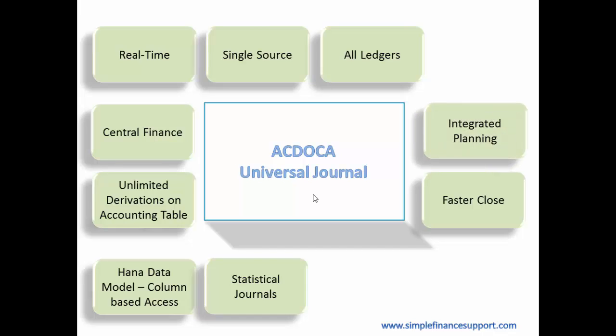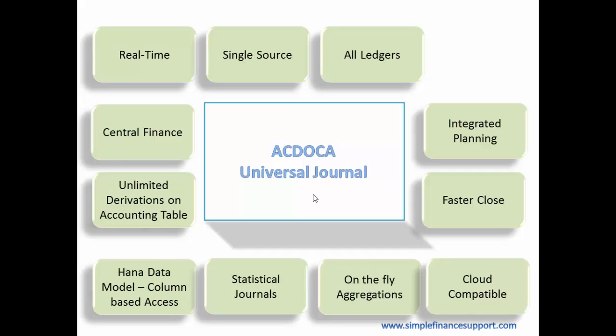Another important feature is that the BPC module — Business Planning and Consolidation — can be directly integrated into your ECC or S4 HANA architecture, providing much more value for planning. On-the-fly aggregations are now possible because there are no index tables; data is retrieved from the huge HANA database table and aggregations can be built on the fly. SAP now offers two versions of the product: S4 HANA on the cloud as well as on-premises, and cloud compatibility is much easier with the universal journal concept.